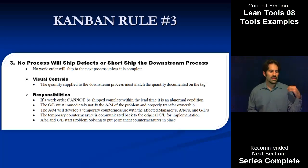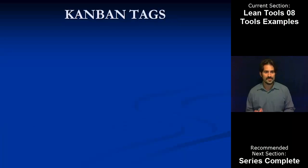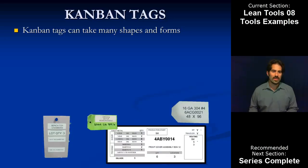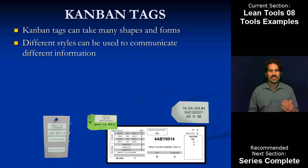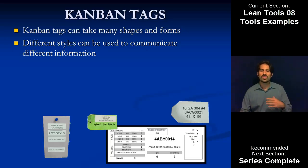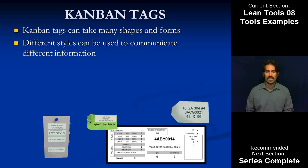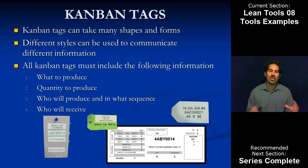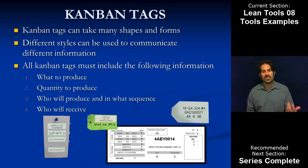The third rule: we don't want to ship defects or short-ship downstream processes with our Kanban, because Kanban is a function of lead time and usage. If we exceed our lead time, we break the lead time part of that and the system will fail. If we short-ship or ship defects that can't be used, we don't satisfy the usage part of our expectation and the system fails from the other end. So if the expectation is we provide five of something, we always provide five — never four, never three. Moving to the tags: they can take many shapes and forms, and different styles can be used to communicate different information — shape, color, area. The core information on a Kanban tag must say what to produce, the quantity, who's going to produce it, the production sequence, and where it goes when it's done.